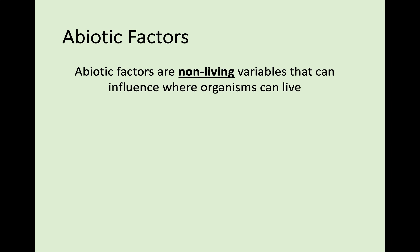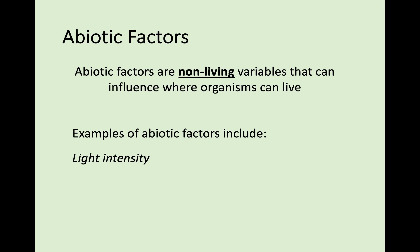Abiotic Factors are non-living variables that influence where organisms live. Some examples include light intensity, temperature, soil pH, and the moisture level of soil. The main thing here is that these are not living things — light intensity, temperature, pH, and moisture are not living things. So they are abiotic.